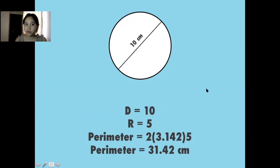What if you don't know the radius, but you do know the diameter? So all you need to do is divide the diameter by 2. So in this case, our radius is 5. And if you plug in the values to the formula, you get the total perimeter of 31.42 centimeters.